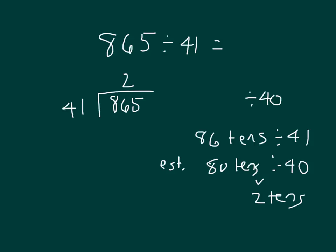2 times 41, and that's 2 tens times 41, is going to equal 82 tens. And that's why it's right there within our problem. 86 minus 82 is 4. Those 4 tens get regrouped with that 5, which was worth 5 ones, to give us 45 ones.